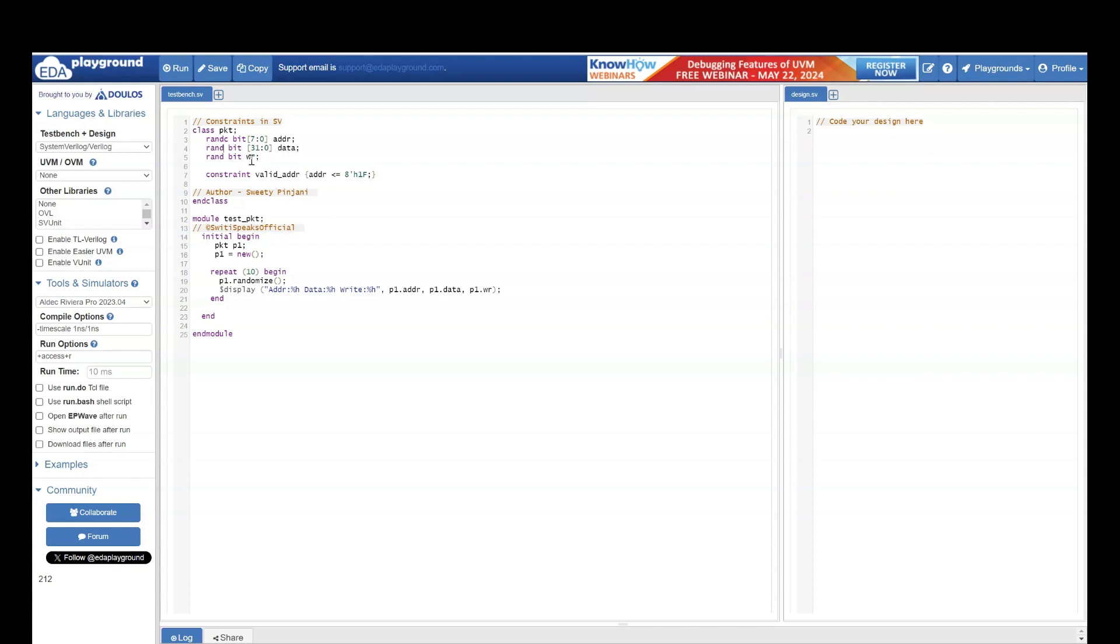If write is 1, it means it's a write transaction. If write is 0, that means it's a read transaction. Now we have a constraint called valid address, which means I want to generate address which is in valid range. And for my test scenario, I want the address to be from 0 to 1f. That is why I have said address should be less than or equal to 1f.